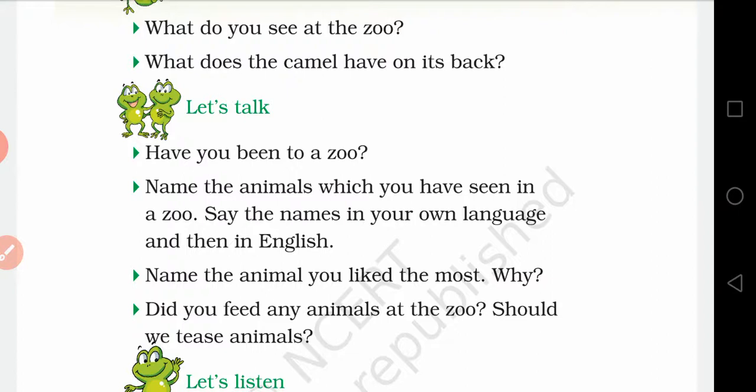Have you been to a zoo? If yes, write 'Yes, I have been to a zoo.' If not, write 'No, I have not been to a zoo.' Name the animals which you have seen in a zoo. Say the names in your own language and then in English. Tell the names of animals and birds, then their local name, and also in English, just like tiger, lion, elephant, etc.